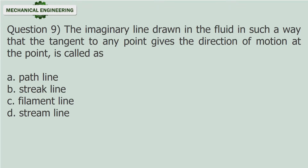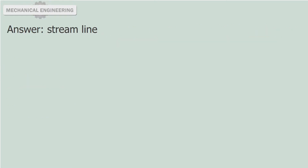Question 9. The imaginary line drawn in the fluid in such a way that the tangent to any point gives the direction of motion at that point is called as: A. Path Line, B. Streak Line, C. Filament Line, D. Stream Line. Answer: Stream Line.